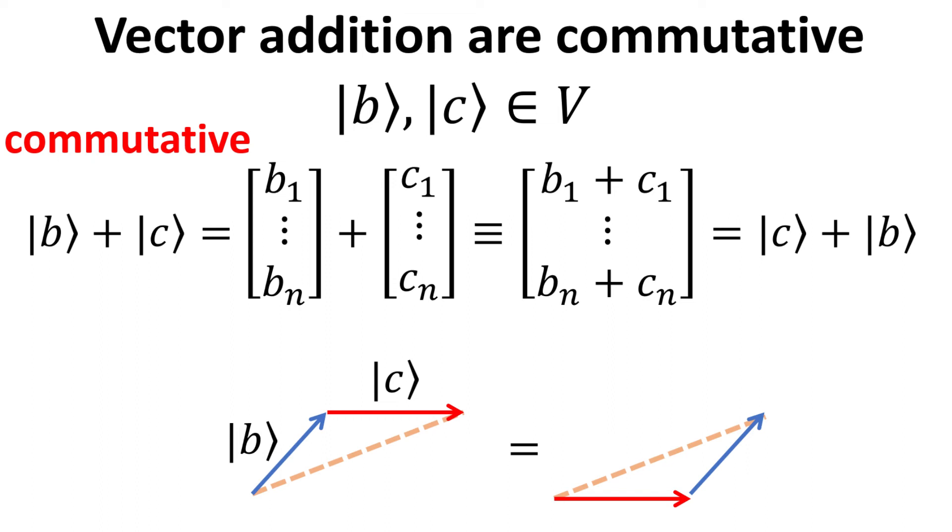Vector addition of two kets, B plus C, must equal C plus B, and this is called the commutative law.